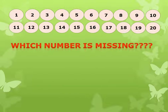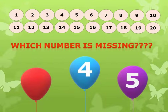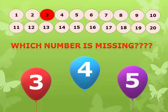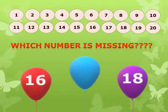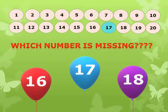Now, tell me which number is missing? Missing is 3. Very good. Missing number is 3. Very good. Now, which number is missing? Missing is 70. Very good. Right answer.